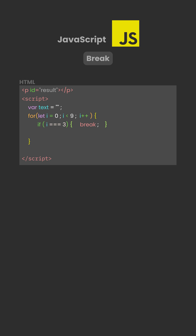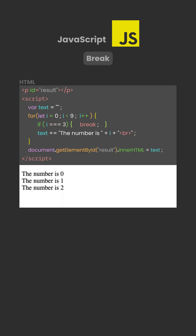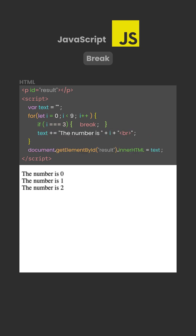No more iterations happen, even though the loop condition would normally continue. As a result, only the numbers 0, 1, and 2 are added to the text.